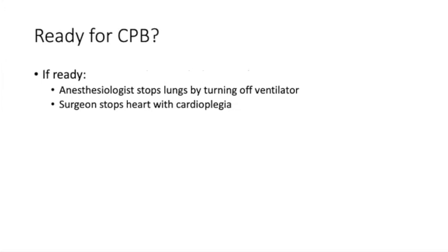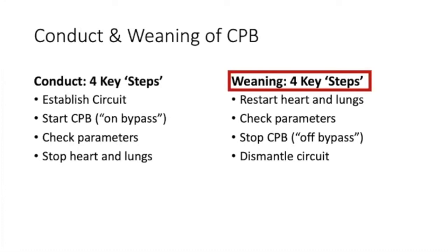When ready, the anesthesiologist turns off the ventilator and the surgeon stops the heart with cardioplegia — the start of the operative period. To wean from bypass, the process is essentially the reverse of those four steps: restart the heart and lungs, recheck parameters, come off bypass, then dismantle the circuit.